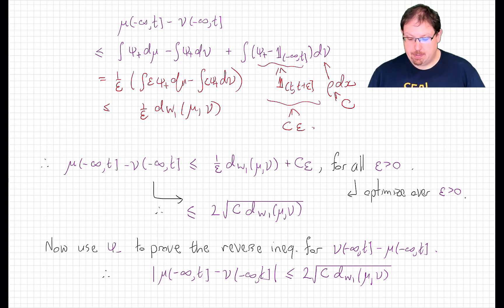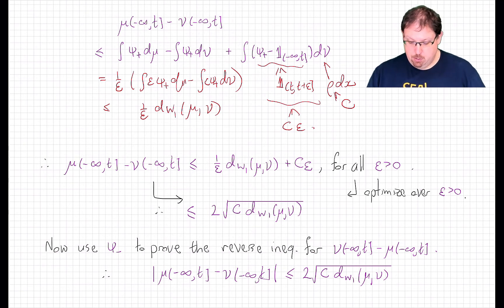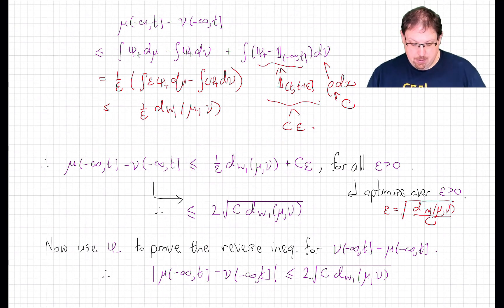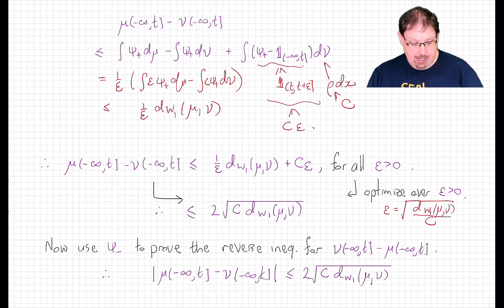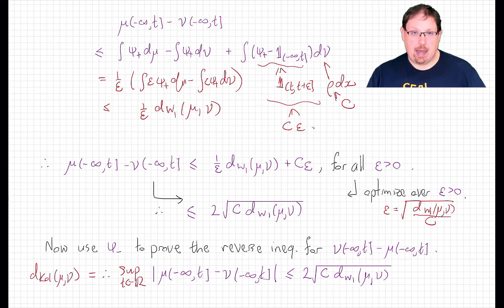We're not going to send ε to 0 or infinity — we want to optimize this bound by choosing ε to make it smallest. That's a first-year calculus problem, and the optimizing value of ε is the square root of the Wasserstein distance divided by c. Plugging that in gives the bound 2√(c · W₁(μ,ν)). Similarly, using ψ⁻ proves the reverse inequality. Since this optimal ε doesn't depend on t, we get this as an upper bound for every t, and therefore for the supremum over t, which gives us the Kolmogorov metric bound we were trying to prove.